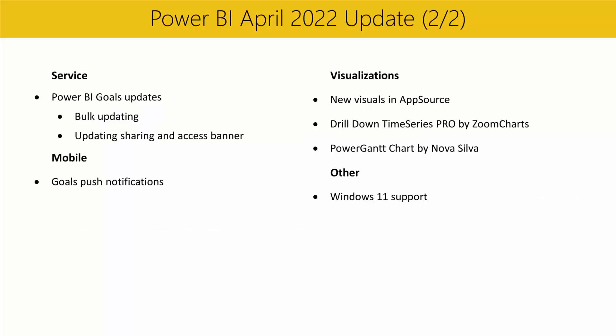We have some updates to Power BI Goals in the Service section. We're introducing bulk updating capabilities and a helpful access and sharing banner. With bulk updating, you'll be able to select multiple goals to make changes to due dates and owners, as well as delete multiple goals at once, with more capabilities like status changes and status rules rolling out in the coming weeks. We've also included a helpful banner that calls out when goal owners do not have access to the scorecard containing their goals, making it easy to ensure all owners can access and provide updates on their goals' progress.